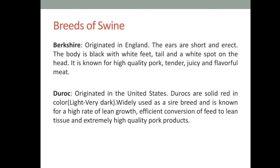Berkshire: they originated in England. The ears are short and erect. The body is black with white feet, tail, and a white spot on the head. It is known for high quality pork — tender, juicy, and flavorful meat. Duroc: they originated in the United States. They are solid red in color, varying from light to very dark. Widely used as a sire breed, known for a high rate of lean growth, efficient conversion of feed to lean tissue, and extremely high quality pork products.